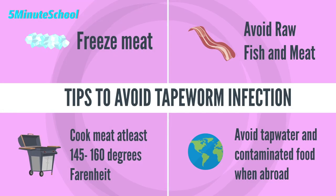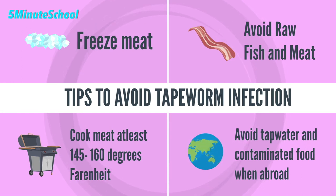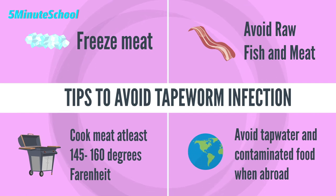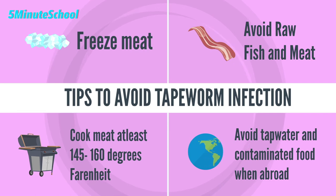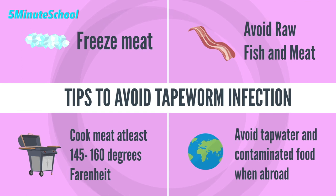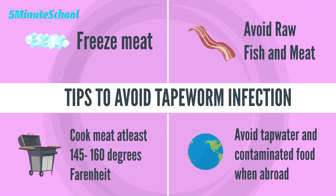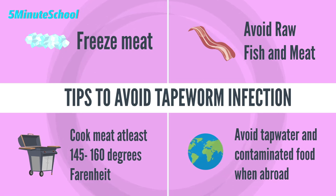Some key things to note regarding preventing a tapeworm infection include freezing meat if you are storing it. If meat is frozen for at least 24 hours, it kills the tapeworm eggs which may be present in the meat. Avoid eating raw meat or raw fish. Cook meat at appropriate temperatures — at least 145 to 160 degrees Fahrenheit. If you are abroad, avoid drinking tap water and ensure your food is cleaned and cooked well. You should also avoid eating unwashed fruits and vegetables.